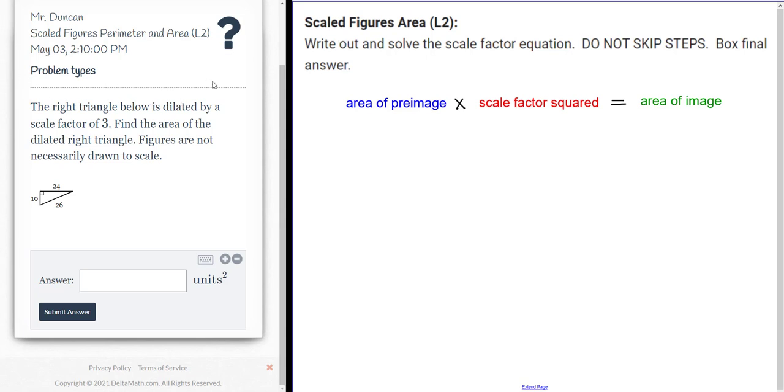The right triangle below is dilated by a scale factor of 3. Find the area of the dilated right triangle. Figures are not necessarily drawn to scale. So the first order of business for us is we actually need to figure out the area of this right here.